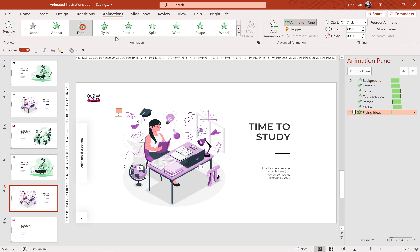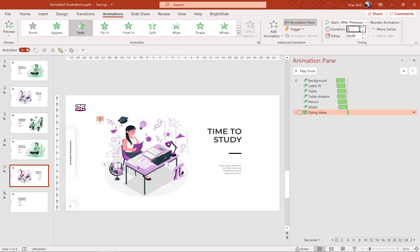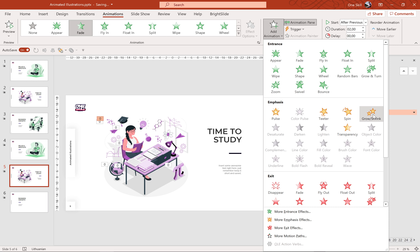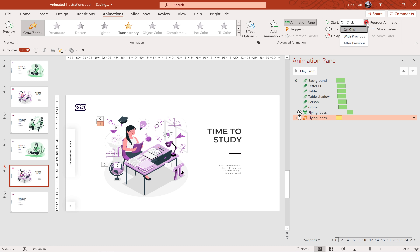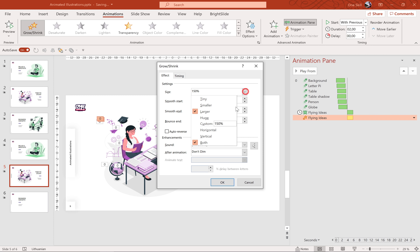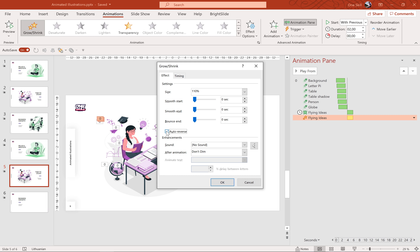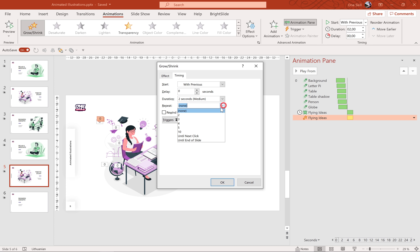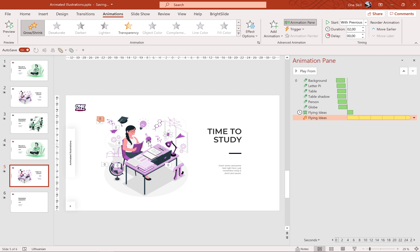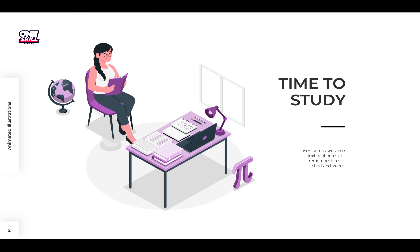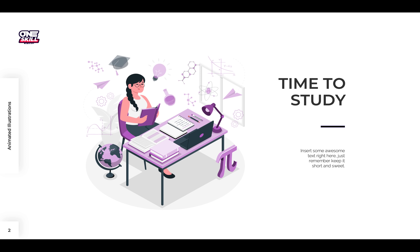Let's select all of the flying ideas and add a Fade animation. Let's make sure that it starts After Previous, duration two seconds. Now let's add one more animation to these flying ideas — let's choose the Grow/Shrink animation. Let's make sure it starts with previous. In the Effect Options we can adjust the size: let's use something subtle, for example 110 percent. Let's click Auto Reverse, and for the repeat let's use until the end of slide. Let's check out our second animated illustration on the full screen — all elements fly in with a bounce-in effect, and then we get these pulsing flying ideas. That's awesome.